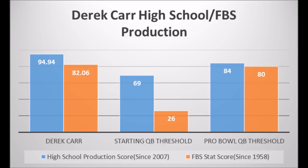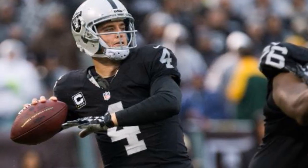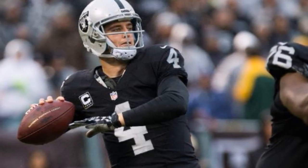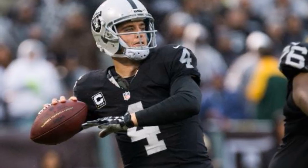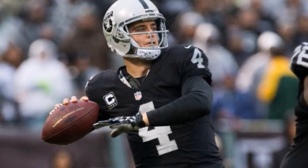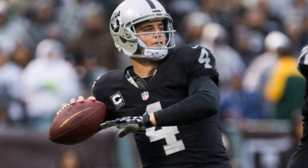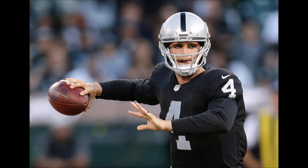That 82.06 hits at least the bare minimum for the majority of Pro Bowl quarterbacks since the 1958 NFL draft class. There have been exceptions — Brett Favre scored about 54 out of 100, Michael Vick about 76, and Drew Bledsoe about 68 — but roughly 90 percent of most Pro Bowl quarterbacks hit at least 80 or higher when it comes to FBS production. Derek Carr met that standard with his 82.06.